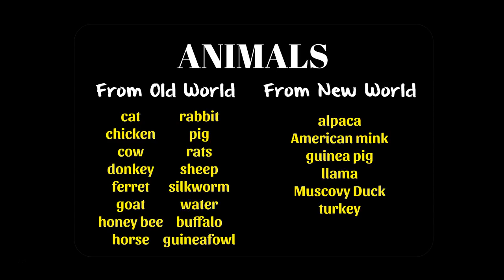You can also think about animals from the old world such as horses and dogs, which gave Europeans an initial advantage in the conquest of the Americas — their use of horses and dogs was really significant in the way they went to war with Native American populations. On the other hand, the American mink, which existed in the New World, became a significant source of income for Europeans through the fur trade.